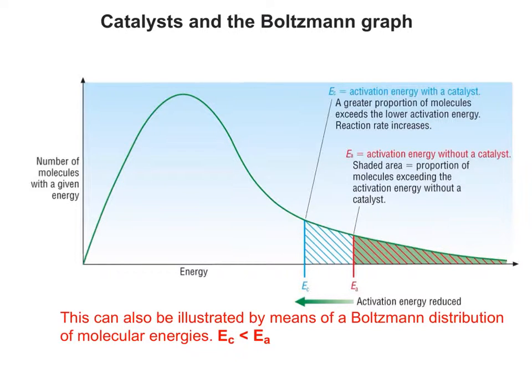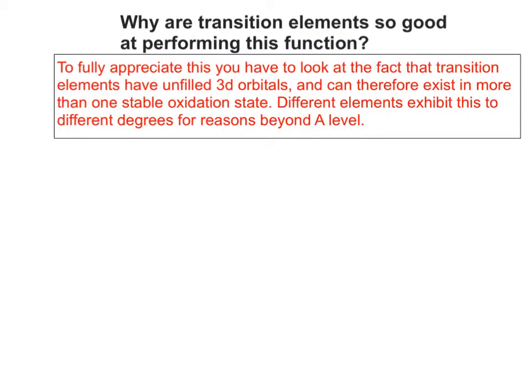So what's this got to do with transition metals? Why are transition metals so good at doing this? To fully understand this, you've got to look at what happens at atom and orbital level. Transition elements have unfilled 3D orbitals, and therefore can exist in more than one stable oxidation state. Different elements exhibit this to different degrees for reasons beyond the specification.